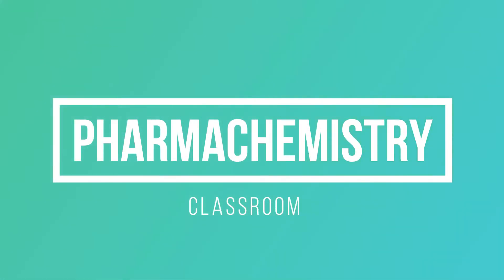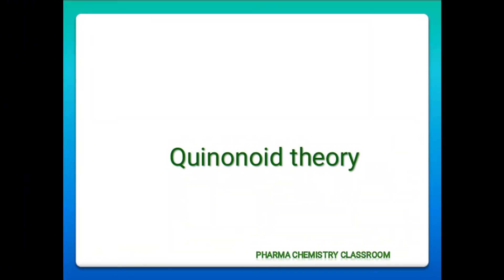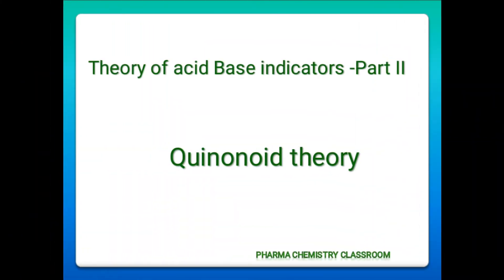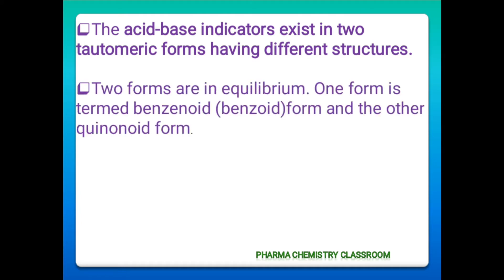Hi all, welcome back to Pharma Chemistry Classroom. Today I'm here with Quinonoid Theory, Part 2 of the theory of acid-base indicators. According to this theory, acid-base indicators exist in two tautomeric forms having different structures. The two forms exist in an equilibrium: one form is termed the benzenoid form and the other is the quinonoid form.